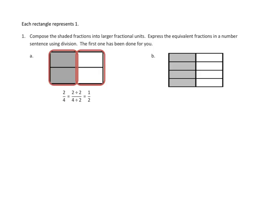So if we think about the way we've been building with area models to build equivalent fractions, in this case it's almost like we're erasing this line. In our previous models, we would have started off with one half and added a line to create the equivalent fraction two-fourths. In this case, we're doing the opposite — starting with the more complicated one where we have four parts, and erasing this line through division to create just two parts. We should be able to do the same thing for 1B.